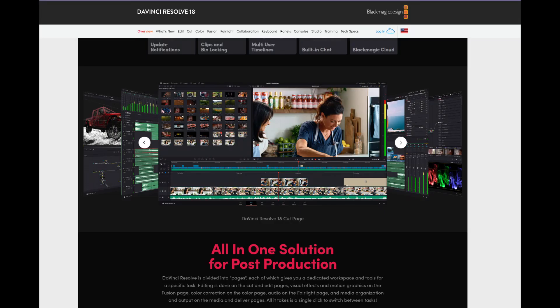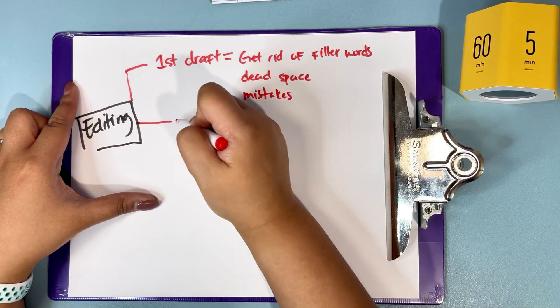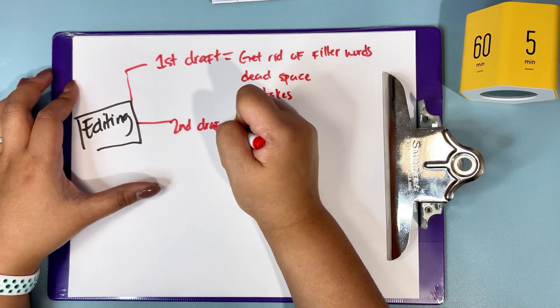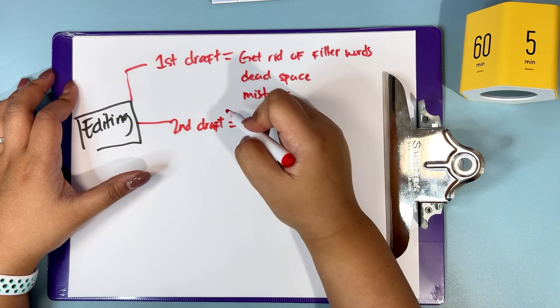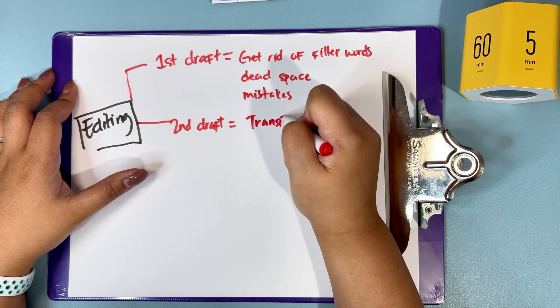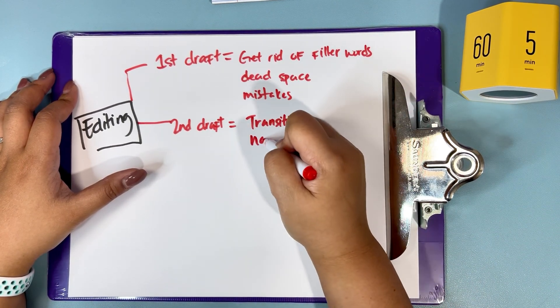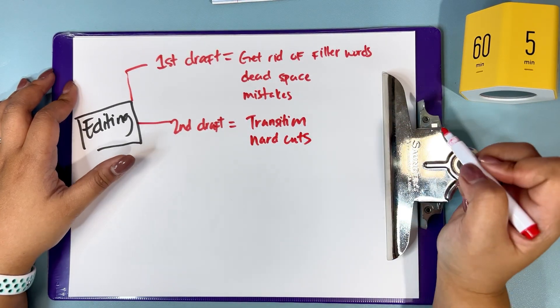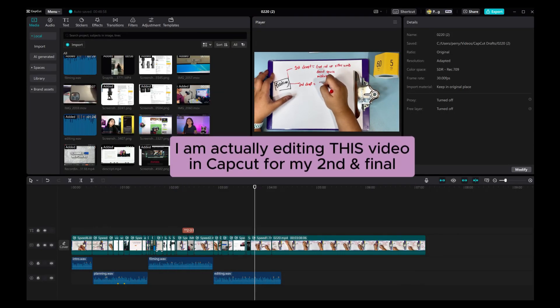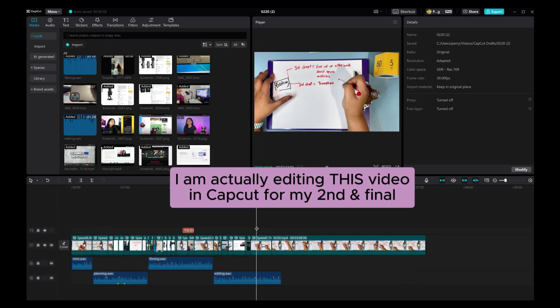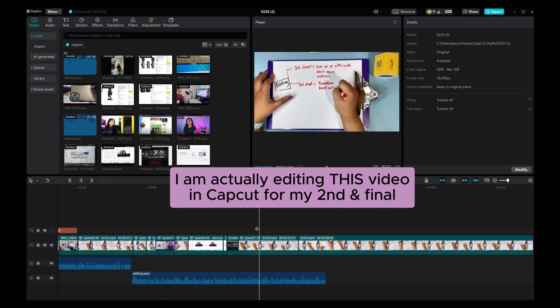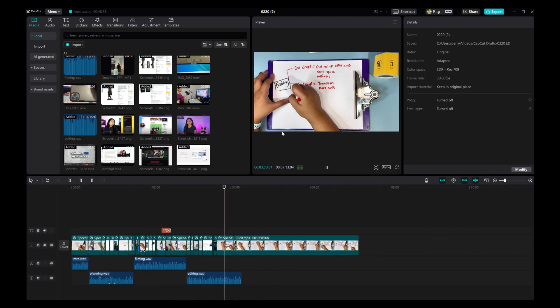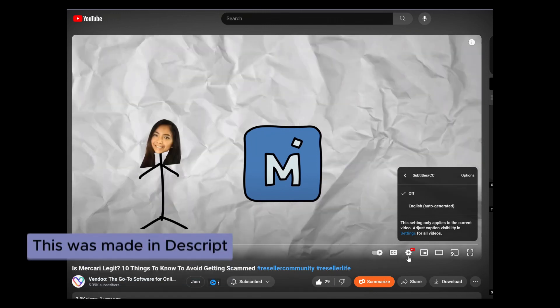For a while, I only used Descript, but now I use DaVinci for polishing. Once I get the first draft done, then I go into my second draft where I'm focusing on transitions and hard cuts. If there's a section I don't like, I cut it and try to make the transition smooth. For a long time, I used Descript for this process since it's beginner friendly, but as you advance, you can use CapCut, DaVinci, or Final Cut Pro.